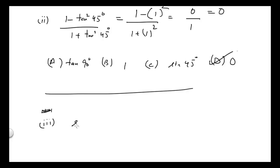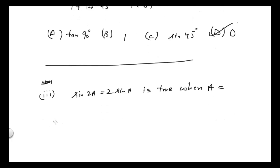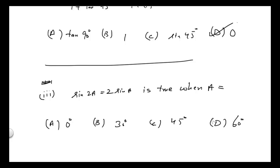Now coming to the third part. The statement is: sin 2a equals 2 sin a. When is this true? The choices given are: (A) 0°, (B) 30°, (C) 45°, and (D) 60°.